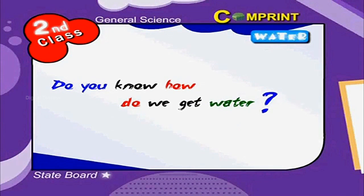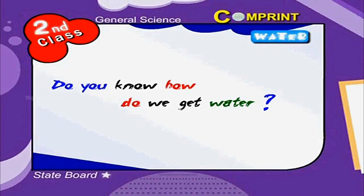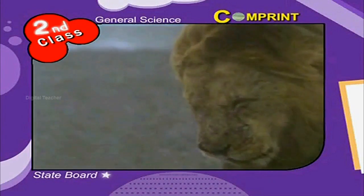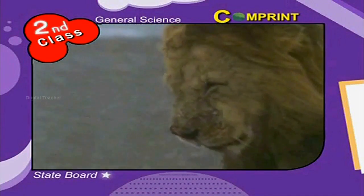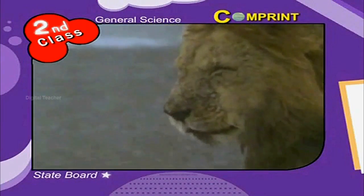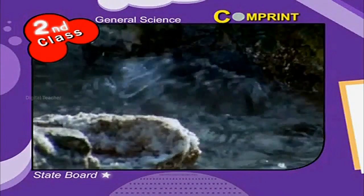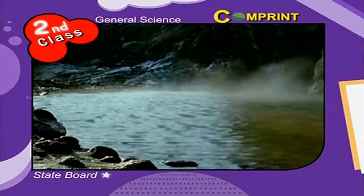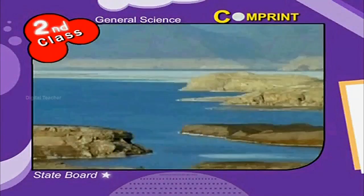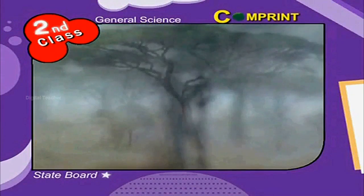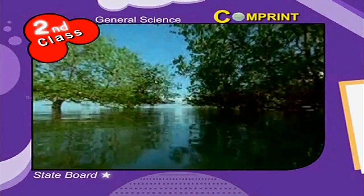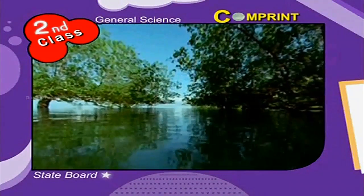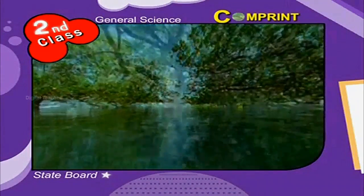Do you know how do we get water? We get water from rain. In some places there are natural springs also, where underground water comes out to the surface. Rain water gets collected in ponds, lakes, tanks, and rivers.